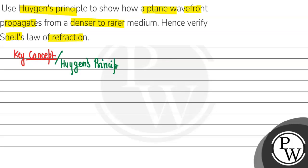So basically, Huygens explained that light travels in the form of wavefronts. Wavefronts are planes where all particles have the same phase.